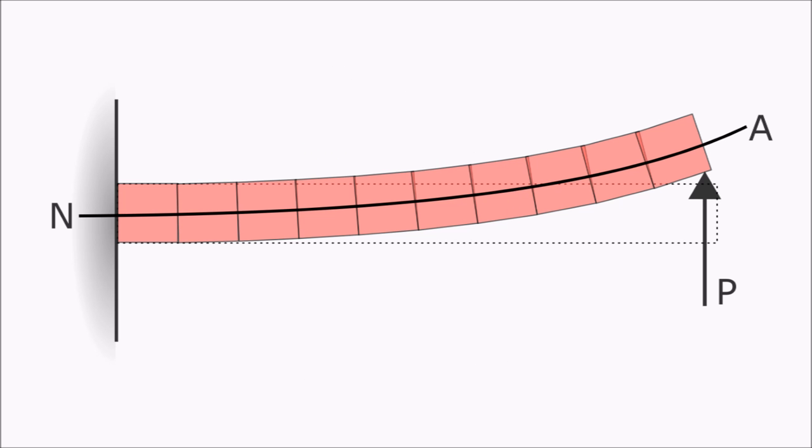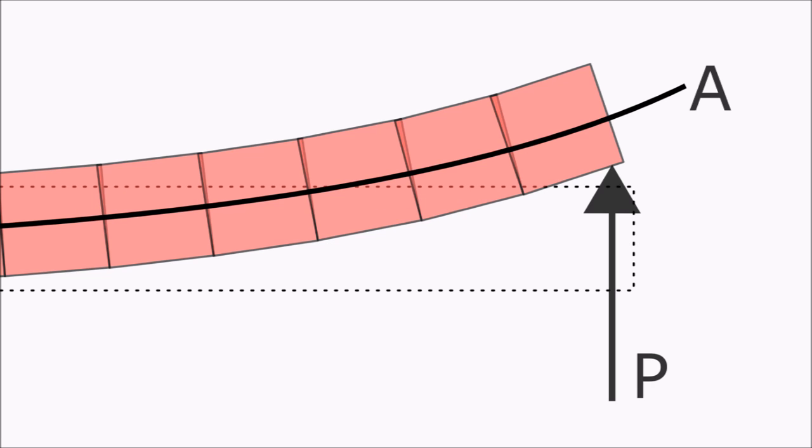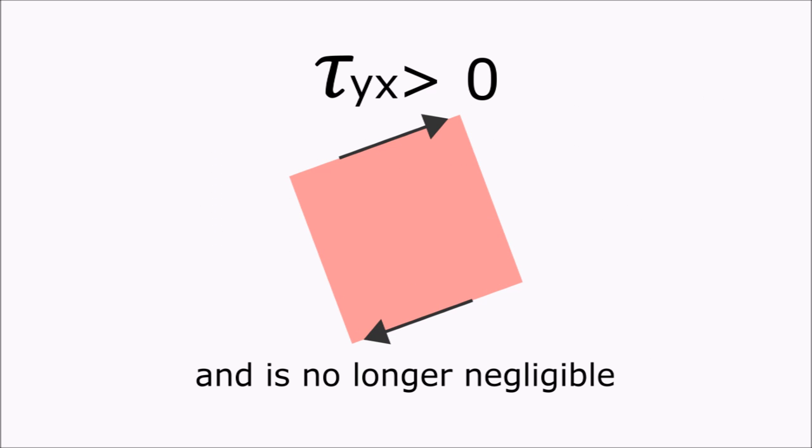A problem only arises with this theory when the bending becomes much more pronounced. Let's take a look at this example. Here, when we zoom in, you can clearly see how the squares are overlapping. This then indicates that there is another tau_yx force, and this time, it really is too big to just keep considering negligible.